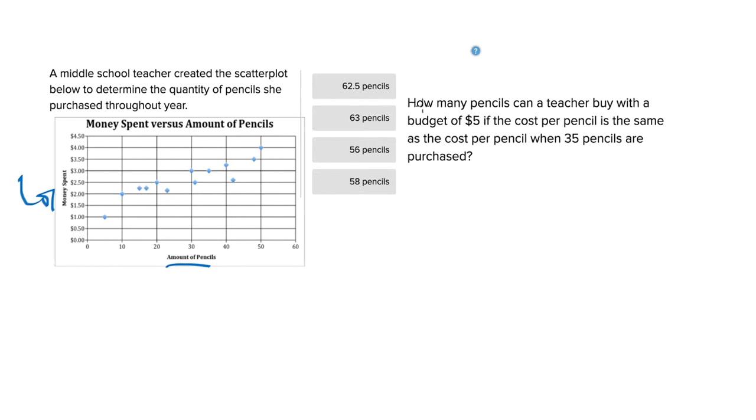We're told that we're looking for the number of pencils that you can purchase if the budget is $5, so we have a limit of $5, and the cost per pencil is the same as when 35 pencils were purchased. So 35 pencils were purchased here between 30 and 40 on the graph for $3.